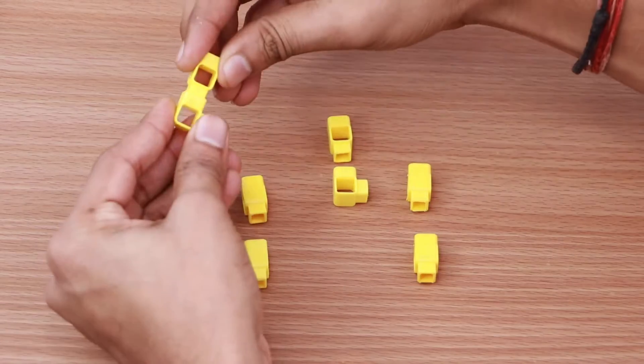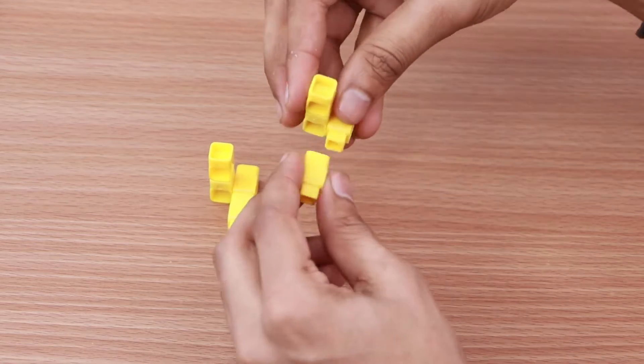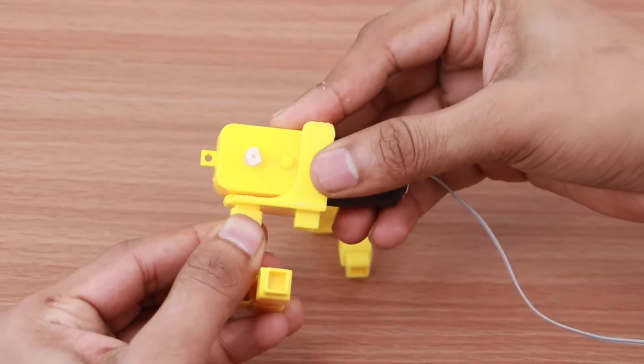Next, take six one-hole beams and two one-hole elbows and join them. Attach a BO motor to these two assemblies.